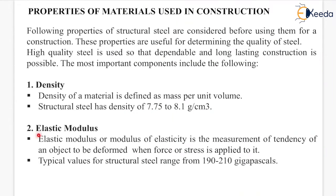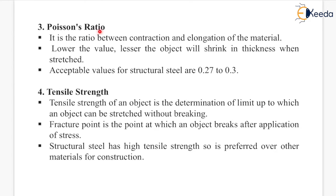Next is the elastic modulus. Elastic modulus, or modulus of elasticity, is the measurement of the tendency of an object to be deformed when force or stress is applied to it. Typical values for structural steel range from 190 to 210 gigapascals.